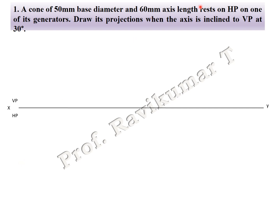One of its generators rests on HP. Generator means the end edges of the cone — the slant end edges are called generators. Draw the projection when it is inclined to VP at 30 degrees. This is similar to the slant triangle face and slant edge problem.